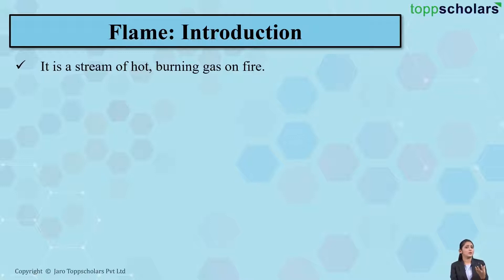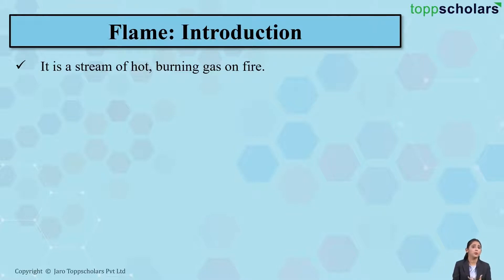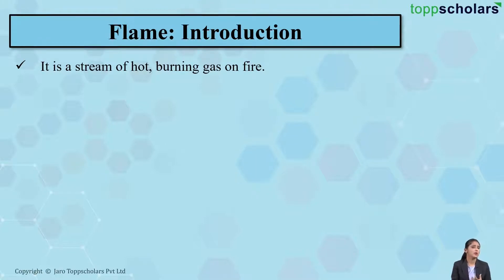There are some substances which produce flame whereas some do not. For example, a candle on burning produces a flame, a kerosene lamp also produces flame, and wood on burning also gives you flame. But if you observe charcoal, charcoal on burning does not give you a flame.